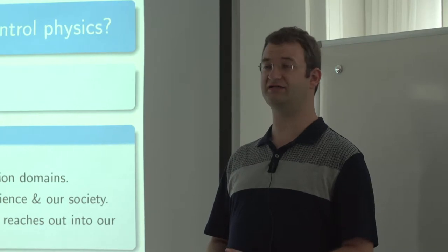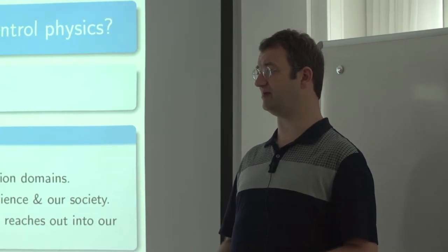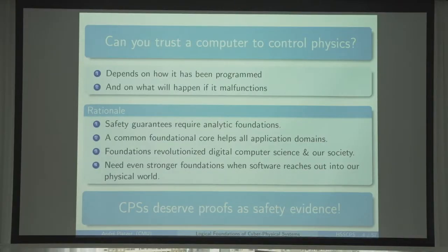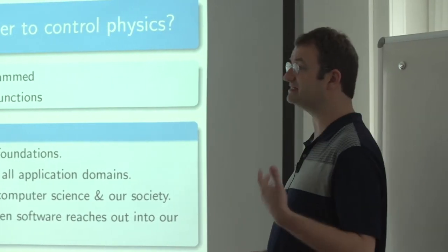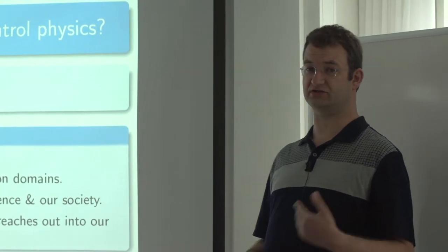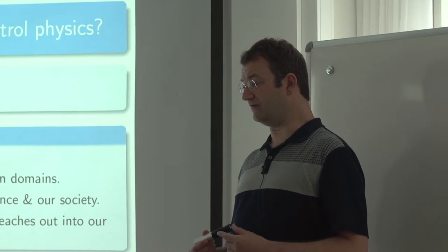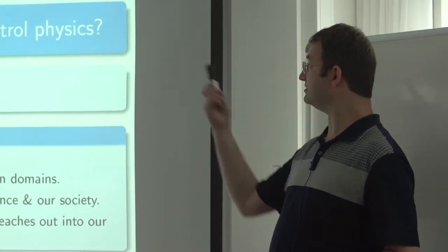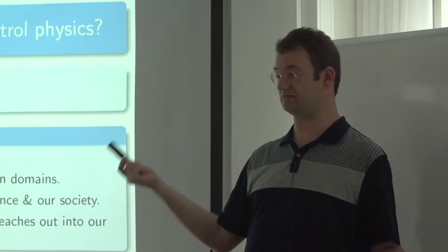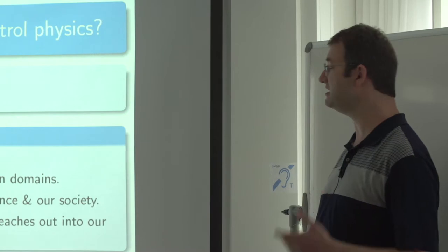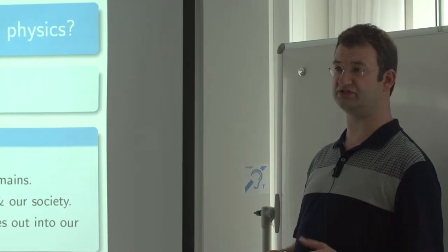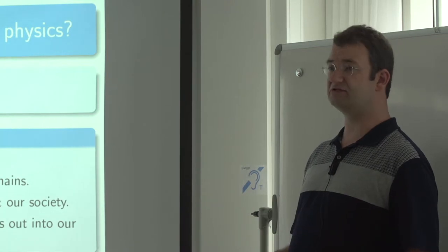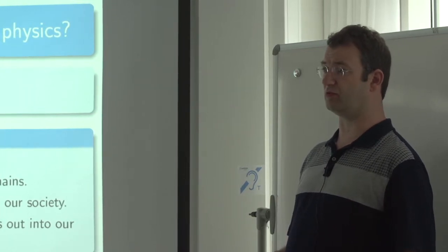The answer depends on how it's been programmed and what will happen if it malfunctions. For example, a Bluetooth-connected GPS-controlled electric toothbrush — the damage it can do is rather limited. But that's certainly not the case for aircraft, trains, robots, or cars. So the rationale behind my research is that computers would gain such trust if only they came with guarantees. And in order for those guarantees to work out, you need analytic foundations — preferably foundations common to all cyber-physical systems.